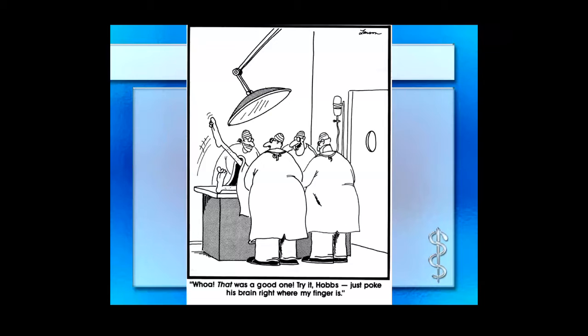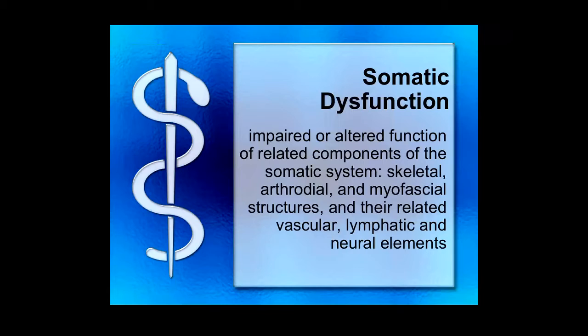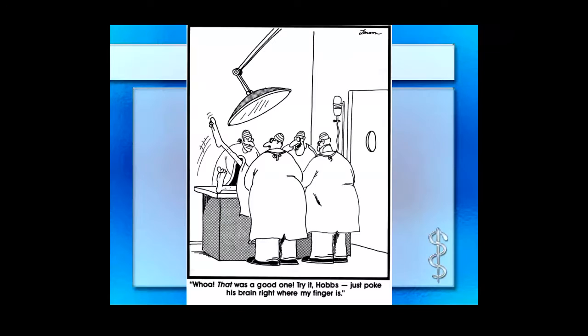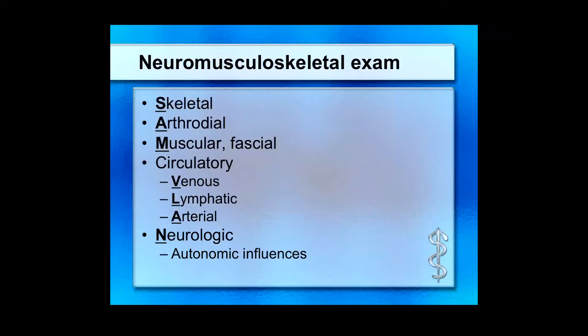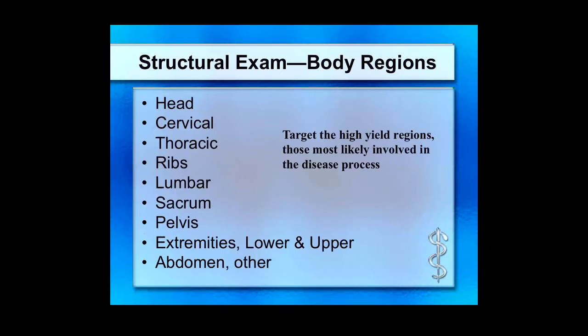When we're palpating and hands-on with our patients, what are we finding? The definition of somatic dysfunction is impaired or altered function of related components in the somatic system. The mnemonic most of us heard in first and second year is the TART mnemonic. When we talk about what we're dealing with in the hospitalized patient, the exam we're really going to focus on is the skeletal, arthroidal, muscular, and fascial components — the first half of that mnemonic.